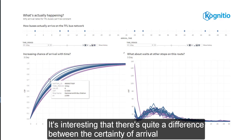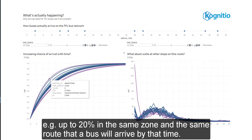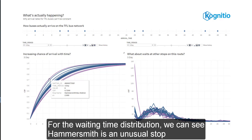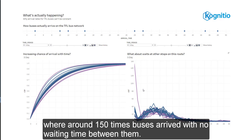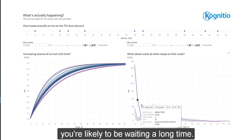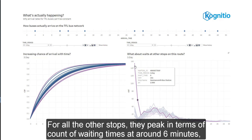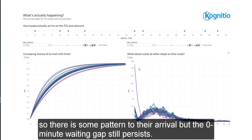It's interesting that there's quite a difference between the certainties of arrival — for example, up to 20% in the same zone and the same route for whether a bus will arrive by that time. For the waiting time distribution, we can see that Hammersmith bus station is an unusual stop, where around 150 times buses had no waiting times between them. So at Hammersmith bus station, if your bus doesn't come in the first 2 minutes, you're likely to be waiting a long time. For all the other stops, they peak at around 6 minutes of waiting time, so there is some pattern to their arrivals, but the 0-minute waiting gap still persists.